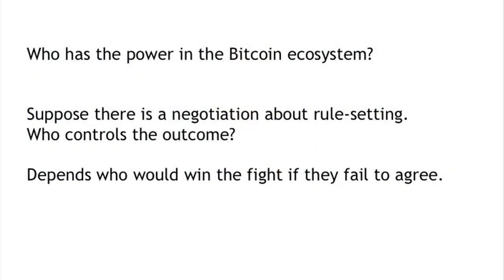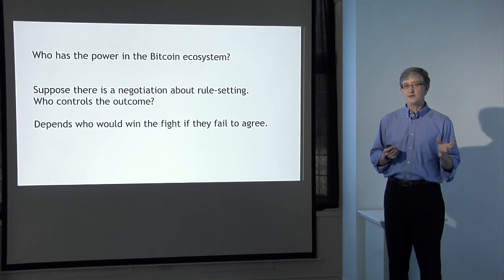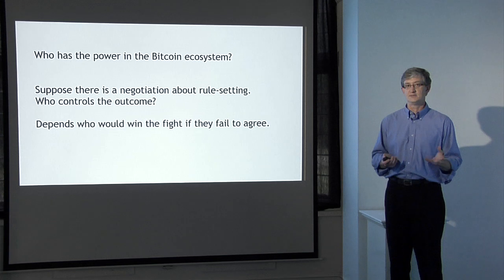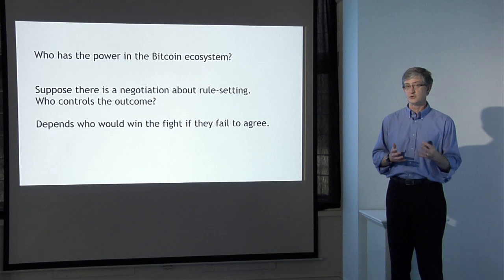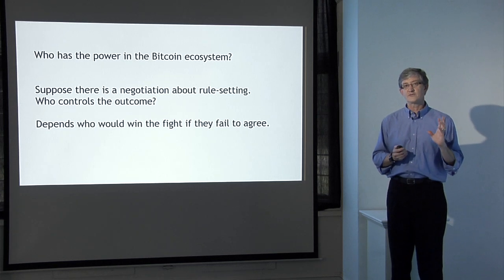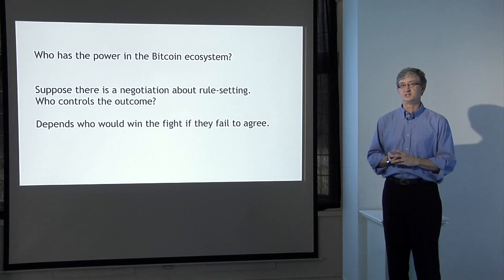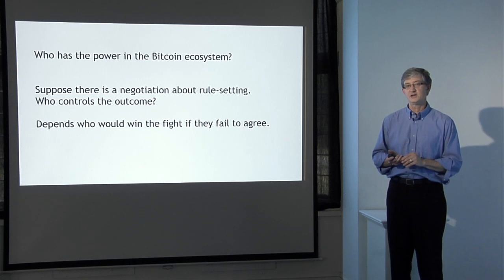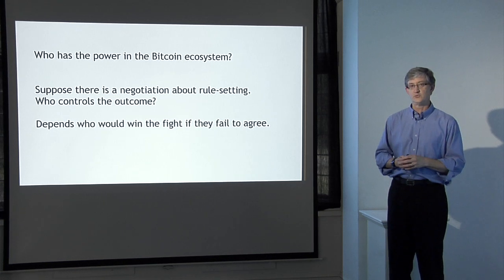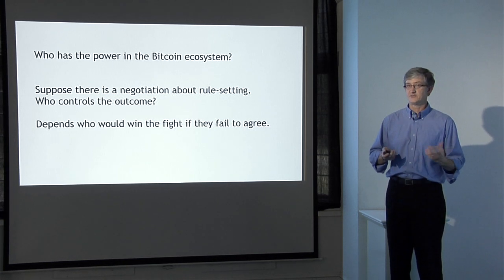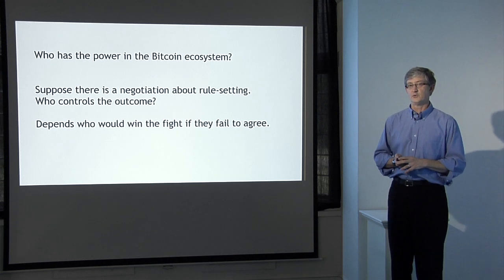Suppose there's a negotiation about rule setting, a disagreement within the community about which rule set should be used — who actually controls the outcome? As with any negotiation, one of the most important factors is to look at what happens if the negotiation fails and it comes down to a fight. Generally speaking, whoever has the best alternative to a negotiated agreement will have the advantage. Whoever is likely to win a fight is likely to win the negotiation. It's the longstanding rule that on the playground, the biggest strongest person is likely to get their way even if no blows are exchanged.